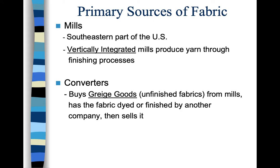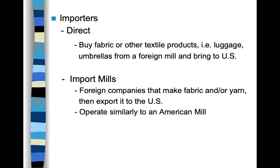The converter buys unfinished fabric directly from a mill, then has it dyed, finished, or printed by another company, and then sells it. The converter takes that raw, unfinished fabric, turns it into colored, printed, or finished fabric, and sells it under their own name. They own the rights to it — it's their fabric now. So converting boring, unfinished material into finished material and selling it is considered a primary source of fabric.